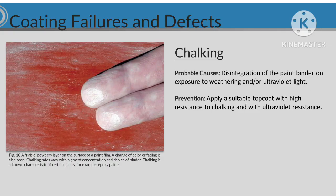Chalking. Probable causes: disintegration of the paint binder on exposure to weathering and/or ultraviolet light. Prevention: apply a suitable top coat with high resistance to chalking and with ultraviolet resistance.